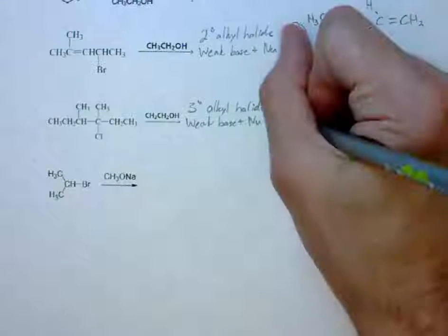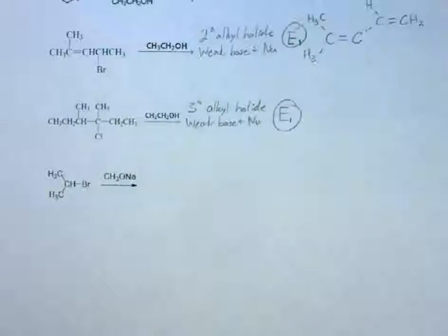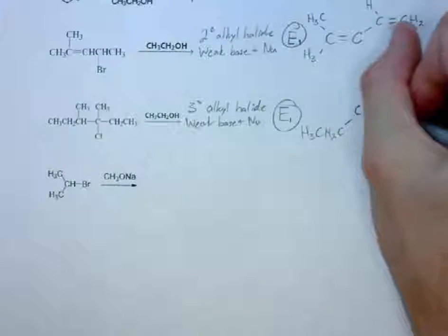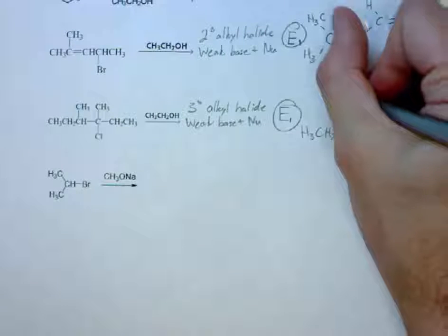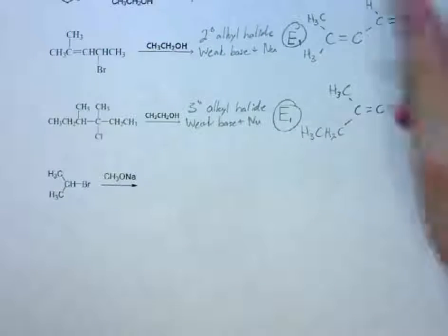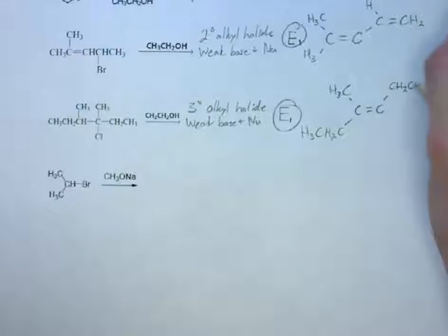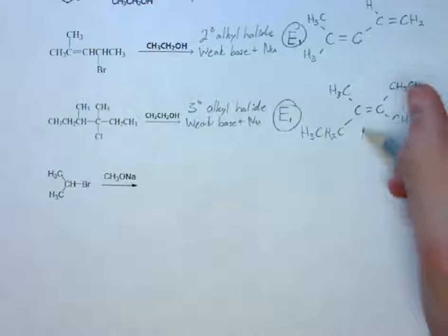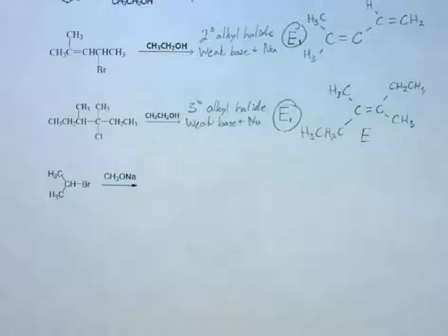Therefore this will be an E1 process and the product will be this. This will be an E isomer here not Z because E1 is going to form the most stable alkene.